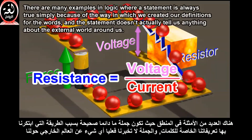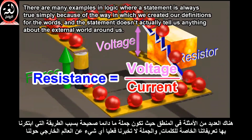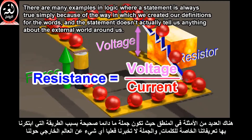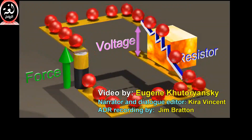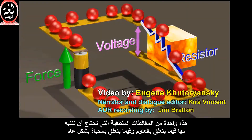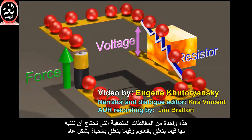There are many examples in logic where a statement is always true simply because of the way in which we created our definitions for the words, and the statement doesn't actually tell us anything about the external world around us. This is one of the logical fallacies we need to watch out for, both with regards to science and also with regards to life in general.